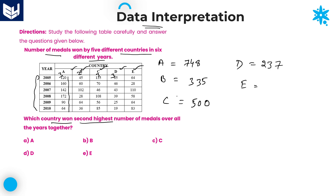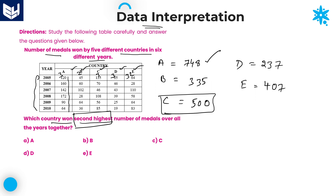For Country E, units place: 4 plus 8 is 12, then 20, 27. Carry forward 2. Then: 2 plus 6 is 8, plus 2 is 10, then 11, 16, 22, 30. Carry forward 3. So 3 plus 1 is 4. Now looking at all values, the highest is obviously 748 for Country A. The second highest is 500, which is Country C. Option C is the right answer.